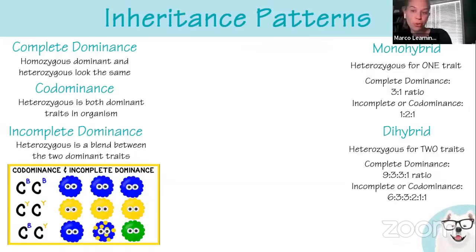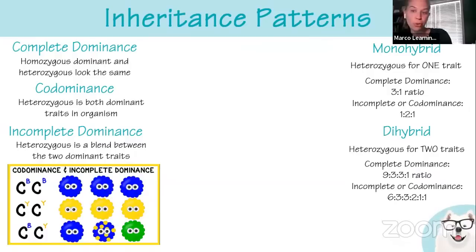With a dihybrid cross, that means you have two different alleles and you're heterozygous for both. For complete dominance it's 9:3:3:1. For incomplete or codominance it's a more extended ratio. It's basically just the same thing extended.